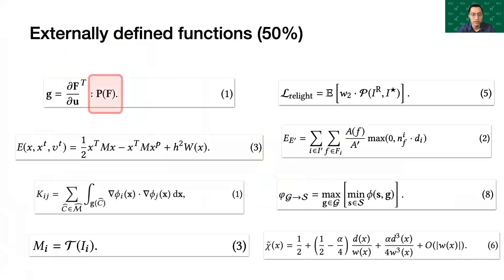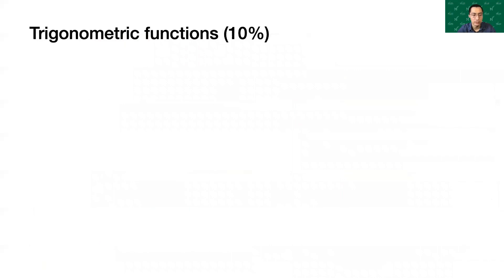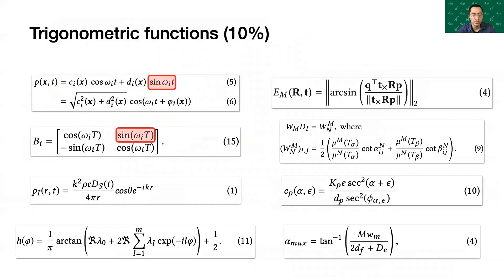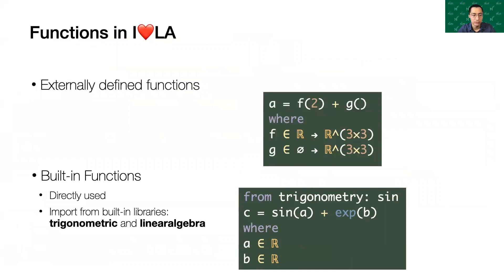Here are some examples for externally defined functions, such as pf, wx, etc. Individual expressions often don't exist in isolation. Similarly, many equations assume the existence of well-known trigonometric functions, such as sine, cosine, etc. I❤LA is intended to integrate with existing programming environments. It can make use of externally defined functions. We also provide built-in functions that can be used directly or imported from libraries such as trigonometric and linear algebra.